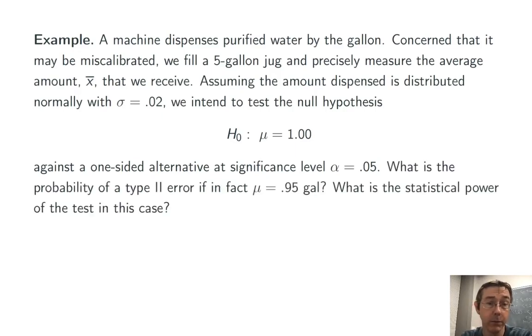Specifically in this vid, we want to look at these questions. What's the probability of a type 2 error if in fact the machine is giving out 0.95 gallons? So obviously less than it should be. And under that same circumstance, what's the statistical power of our test?